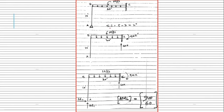First of all, I have to find its static indeterminacy (SI). As it is an open frame, you can simply use the formula: number of support reactions minus number of equations available. We have 5 support reactions total — one vertical, one horizontal, and one moment at one support, and vertical and horizontal at the other. The number of equations available is 3 (ΣFx=0, ΣFy=0, ΣM=0), giving SI = 5 − 3 = 2.